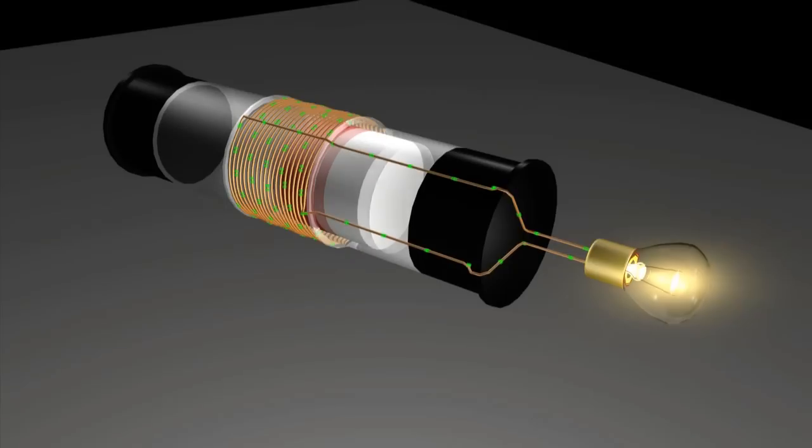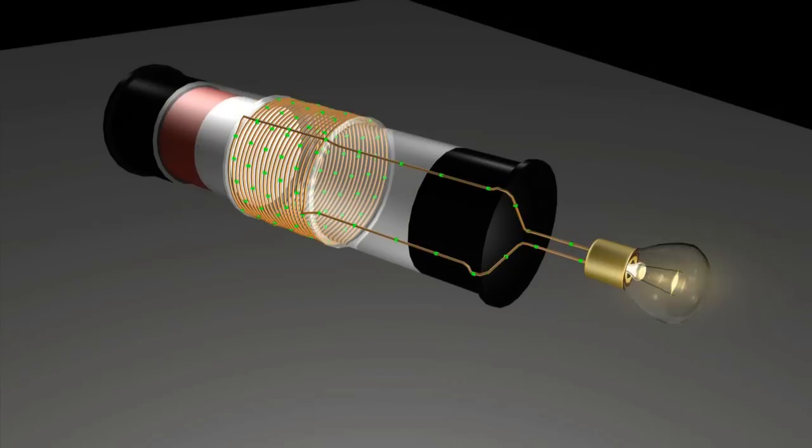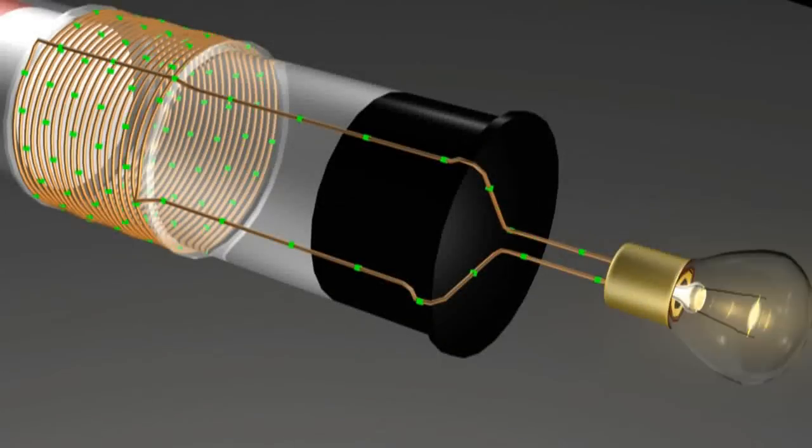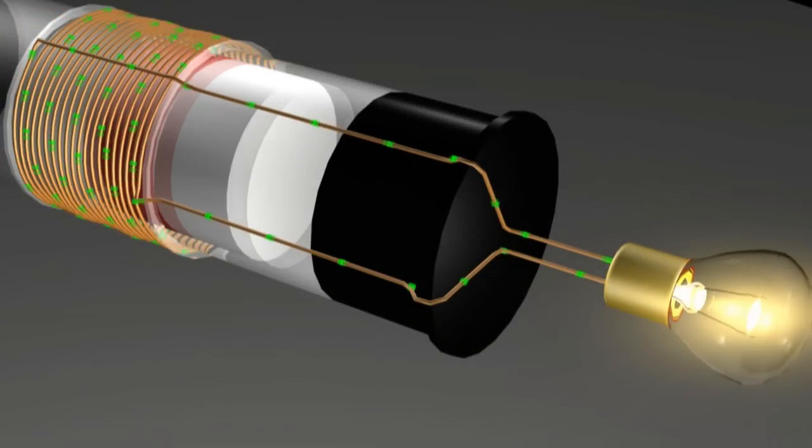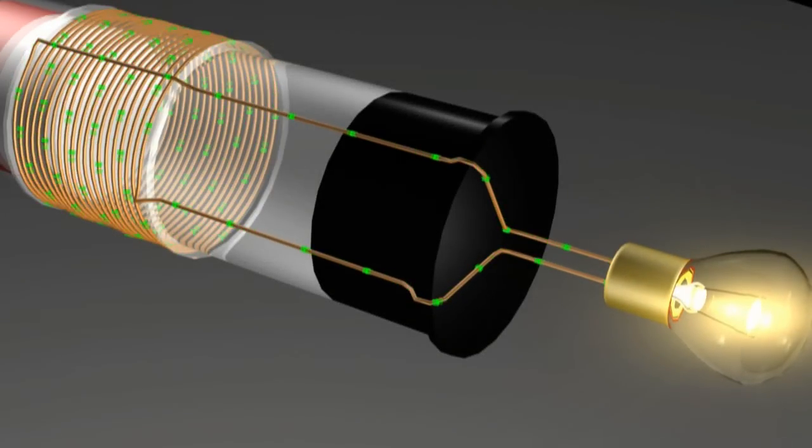As the magnet passes through the coil of copper wire, the magnet's magnetic field cuts the turns of the coil, and this induces a current flow in the coil, seen here. When the magnet moves in the other direction, our current is induced again, but this time in the opposite direction.